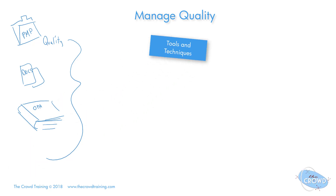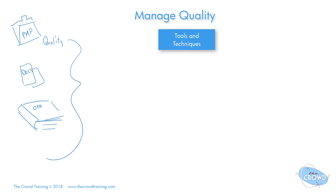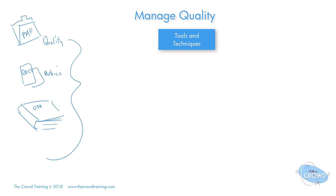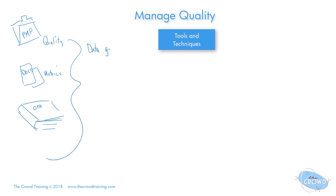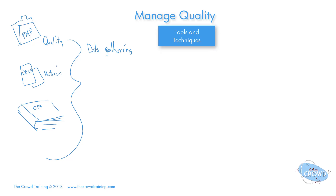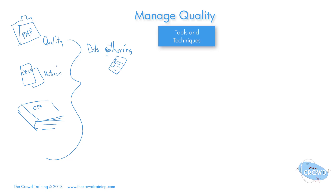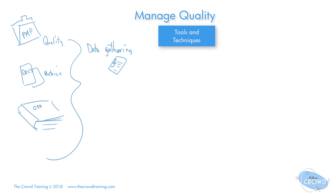There are many tools and techniques, so let's go through each one individually. When we're managing quality and we have these plans and metrics that we've set out, we should have the ability to gather the data accordingly. The techniques in which we do that could be checklists, check sheets, or marks — however we're using to get the data on whether or not we are in fact meeting the quality standards set for this project.